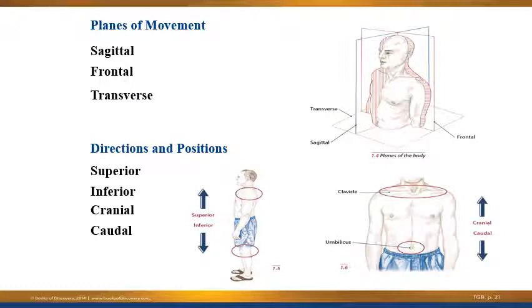As we go through and look at movements, keep in mind what plane they would go through — that's a really important thing. Abduction at the hip would also be in the frontal plane, and flexion of the hip would also be in the sagittal plane, as would extension. As we're going through movements later in the discussion, always be thinking about what plane that motion is taking place in.